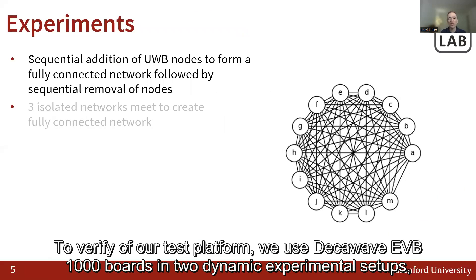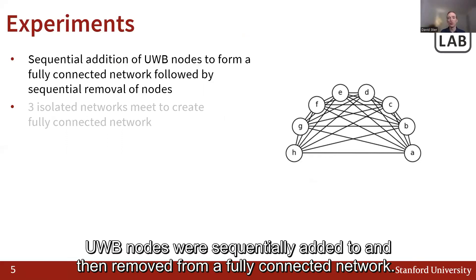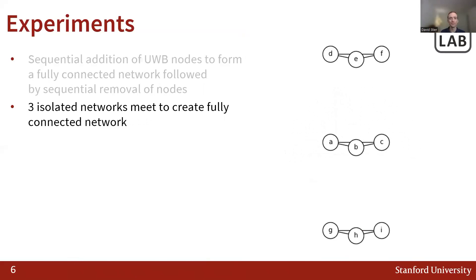To verify our test platform, we used DecaWave EVB-1000 boards in two dynamic experimental setups representing different complexities in network changes. In the first experiment, shown here as static for simplicity, UWB nodes were sequentially added to and then removed from a fully connected network.